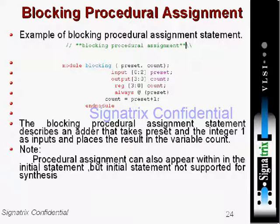The example shown here is of a blocking procedural assignment statement. This shows the module 'blocking' with inputs 2 down to 0 preset and output 3 down to 0 count, which is registered. We are initializing all these variables and ultimately assigning preset plus 1 to count. This example is a typical example of blocking.